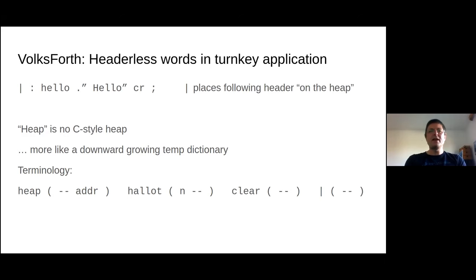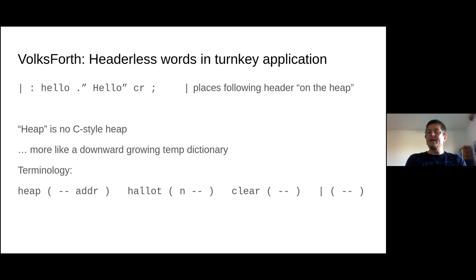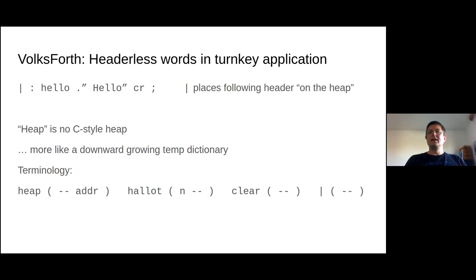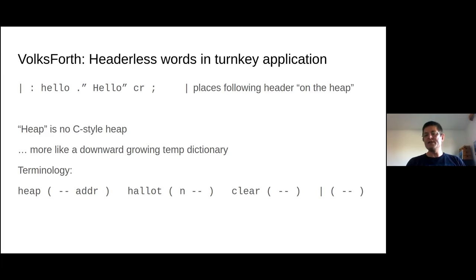The interface gives you the address — the lower address. You can allocate things with heap-alloc, you can clear the entire heap, and you can ask for the next definition to be placed on the heap. The key thing with clear is: once you call it, all the headers placed on the heap are gone, the code is still there, and you've got headerless code.